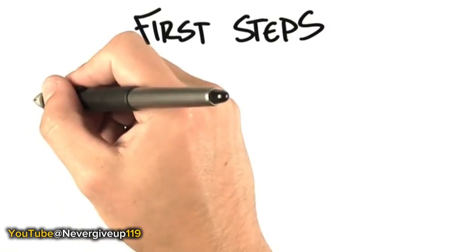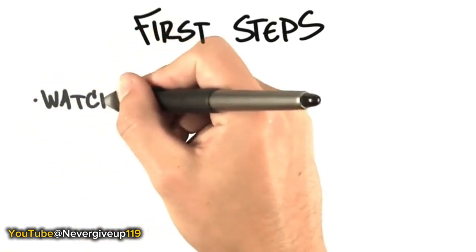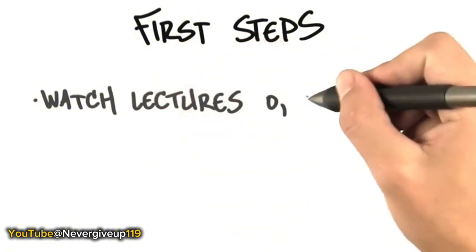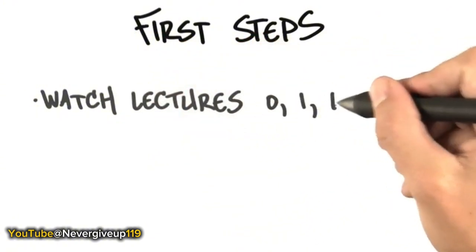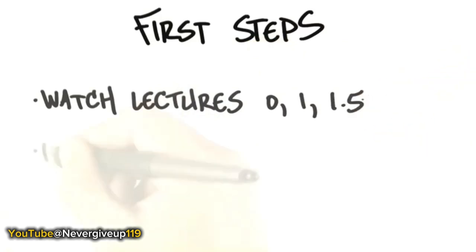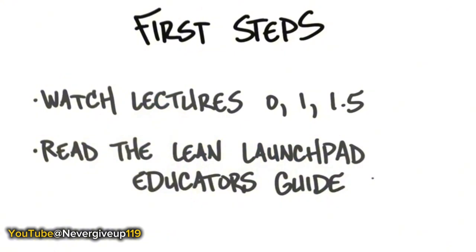My suggestion, to get us all aligned rather than repeating all the lectures we're giving the students, is that you need to go watch Lecture 0, Lecture 1, Lecture 1½, and find your copy of the Lean Launchpad Educator's Guide. That's your prep work for the rest of this conversation. This might take an hour or two to watch all these lectures and get up to speed on the material, but it's well worth your time.